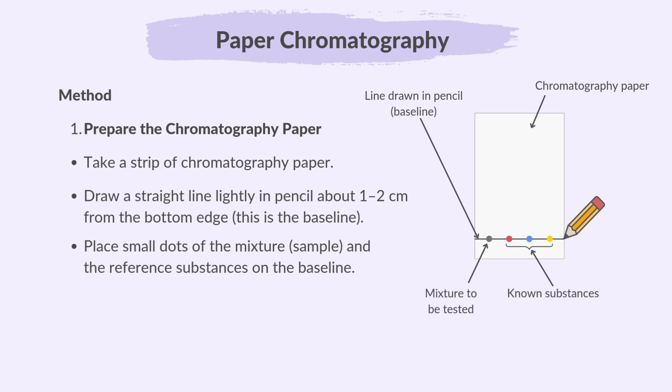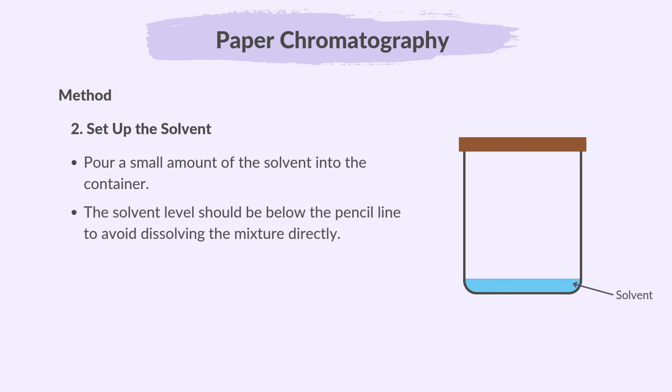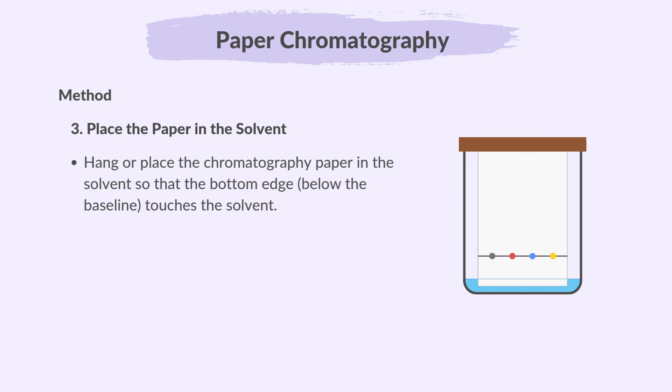Place small dots of the mixture — the sample and the reference substances — on the baseline. Just focus on the mixture to be tested. Pour a small amount of the solvent into the container. The solvent level should be below the pencil line to avoid dissolving the mixture directly. Hang or place the chromatography paper in the solvent so that the bottom edge below the baseline touches the solvent.